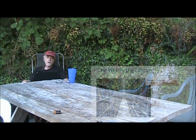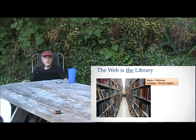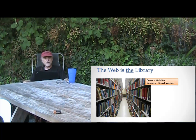If the Web is the library, then the books in the library are the websites. Each website is kind of like a book. We'll talk later in more detail about websites, but that's not a bad way to start understanding them — they're like books. And the catalogs, where you might go into the library and search through a database catalog in order to find a book on the shelves — those are the search engines.